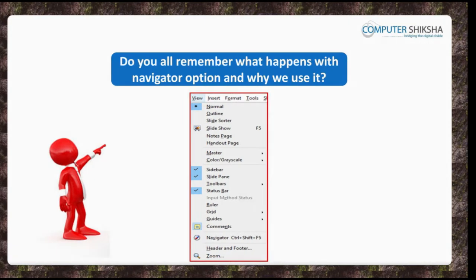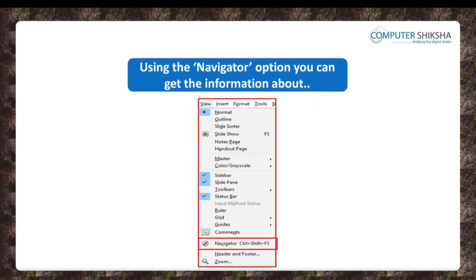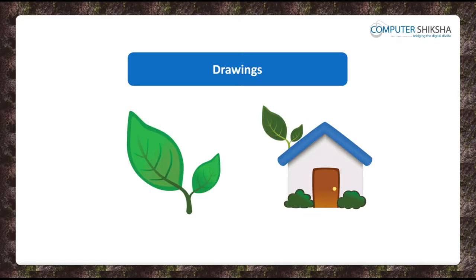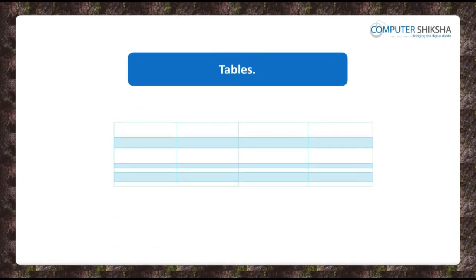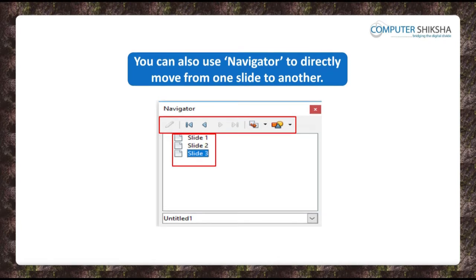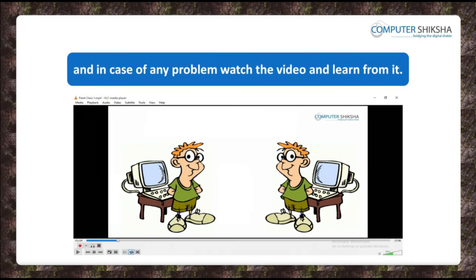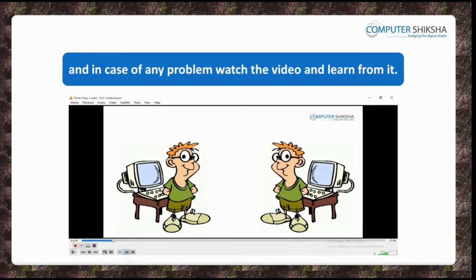Do you all remember what happens with the Navigator option and why we use it? Using the Navigator option, you can get information about the objects, drawings, and tables that have been inserted on your Impress file slides. Also, by using the Navigator you can directly move from one slide to another. You may also use the shortcut command Ctrl+Shift+F5. Watch the video to know more about how the Navigator option is used.